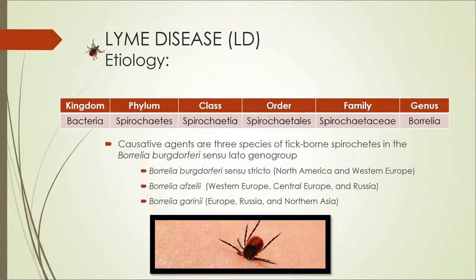What is Lyme disease? Lyme disease is a bacteria caused by tick-borne spirochetes that belong to the Borrelia burgdorferi sensu lato genogroup.